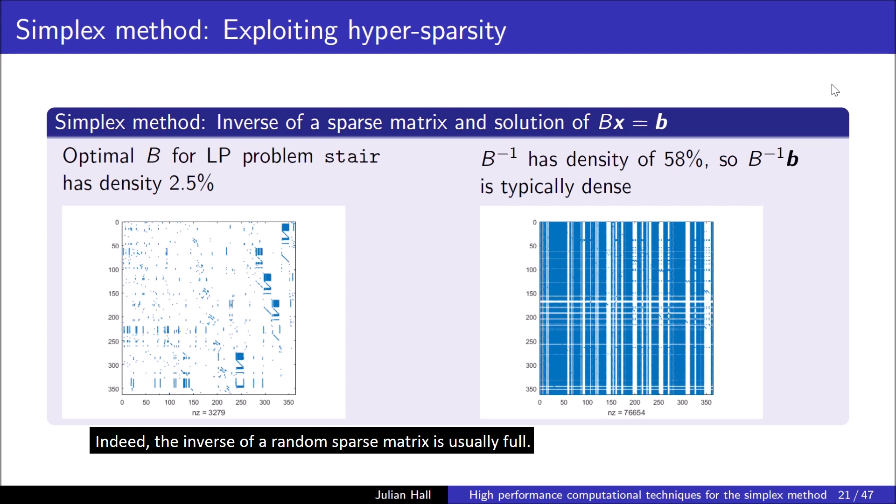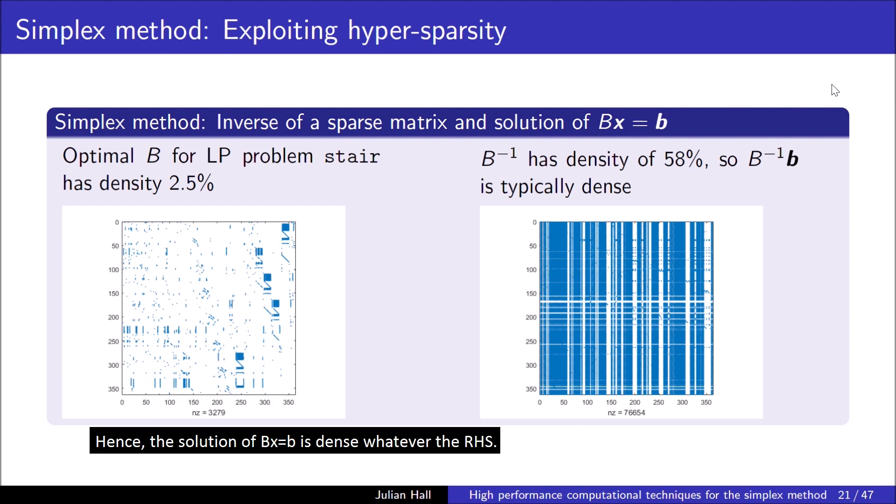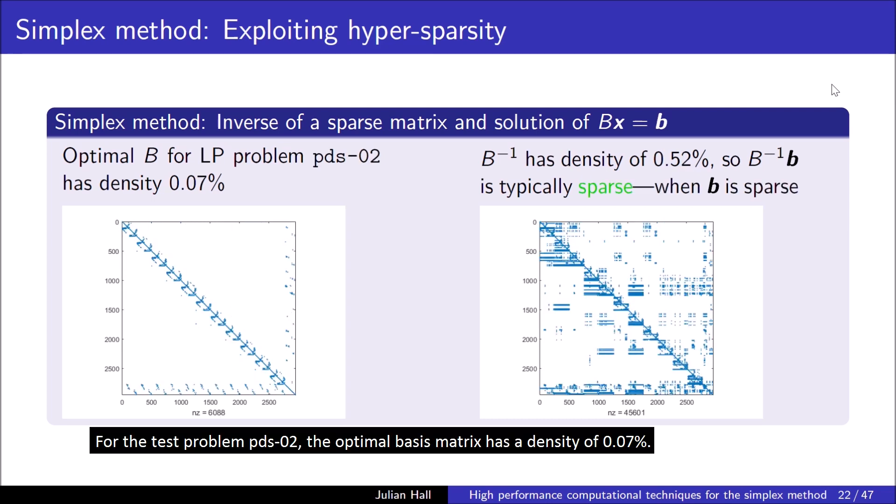Hypersparsity is remarkable because the inverse of a sparse matrix is generally dense. Indeed, the inverse of a random sparse matrix is usually full. For the LP test problem stare, the optimal basis matrix is sparse, but its inverse is more than half dense. Hence, the solution of bx equals b is dense whatever the right-hand side. For the test problem pds2, the optimal basis matrix has a density of 0.07%. However, the structure of the matrix is such that its inverse has a density of half a percent. Hence, when the right-hand side of bx equals b is sparse, the solution is sparse since it is a combination of only a few columns of the inverse.